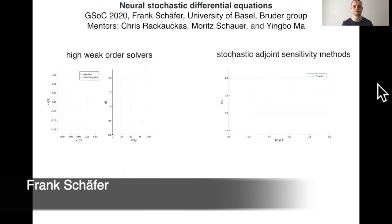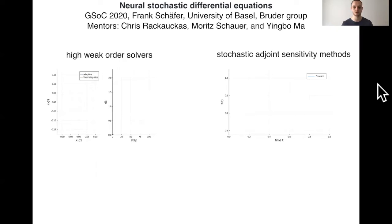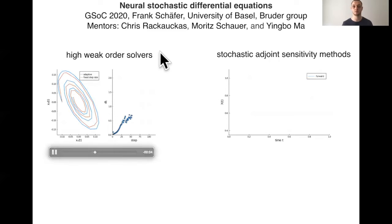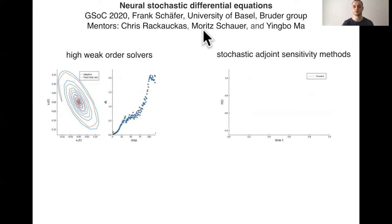Hi everyone, my name is Frank Schäfer and I'm a PhD candidate in the group of Christoph Bruder at the University of Basel. In my Google Summer of Code project, we implemented new tools for neural stochastic differential equations. This project was supervised by Chris Rackauckas, Moritz Schauer, and Yingbo Ma. The new tools can be divided into two categories. On one side, we implemented high-weak order solvers — solvers which allow one to approximate the expected values of moments of stochastic differential equations. We also implemented adaptive high-weak order solvers, meaning solvers that can automatically choose the step size. For neural stochastic differential equations, it's very important to compute the gradients with respect to the parameters of a loss function you want to minimize.